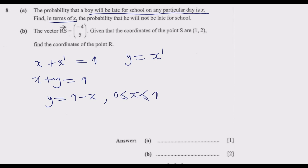Why does the upper bound equal 1? Because 1 means there is certainty that something is going to happen no matter what. So the answer to question (a) is 1 minus x, where x is greater than or equal to 0 and less than or equal to 1. That is how you answer part (a).